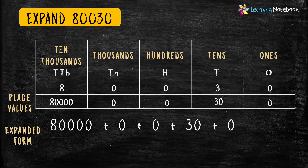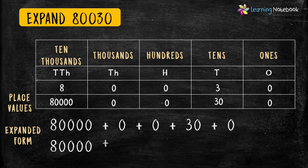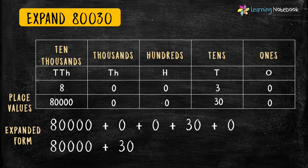Now let's write its expanded form. 80,000 plus 0 plus 0 plus 30 plus 0. Or we can write its expanded form as 80,000 plus 30. Both ways to write its expanded form are correct.